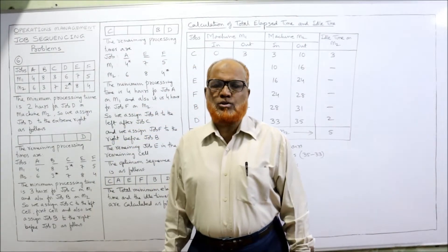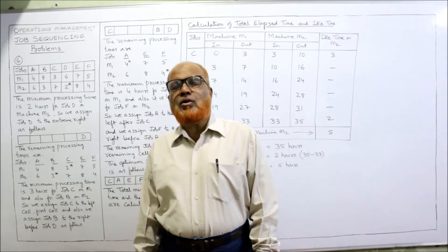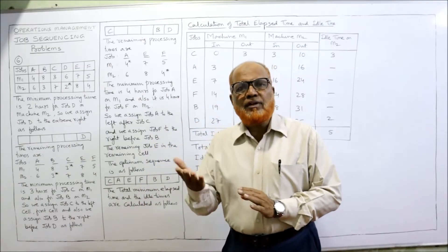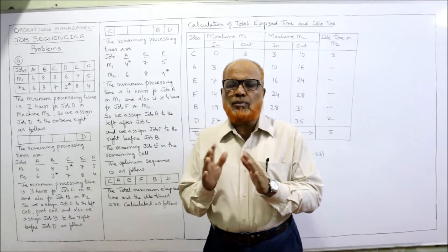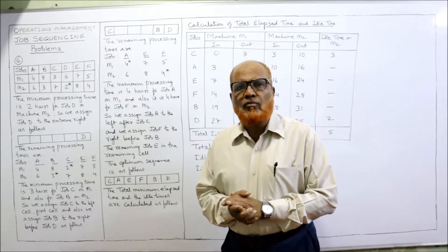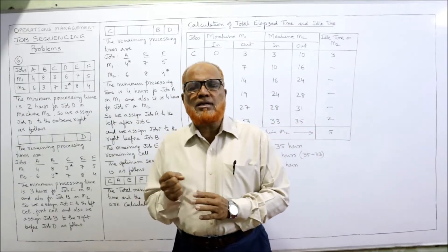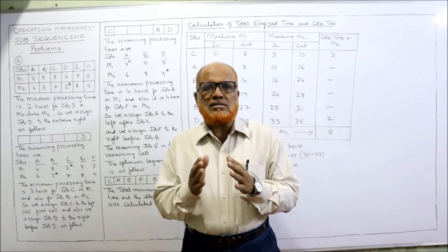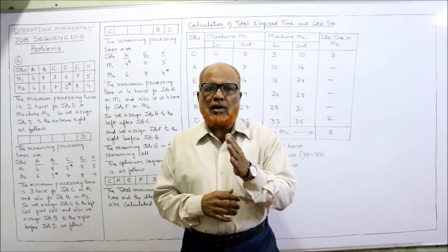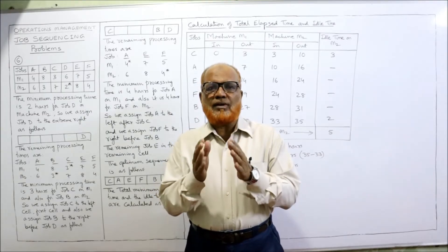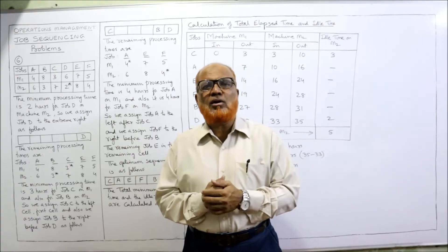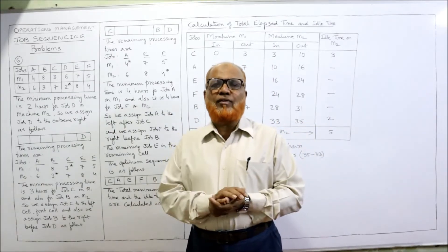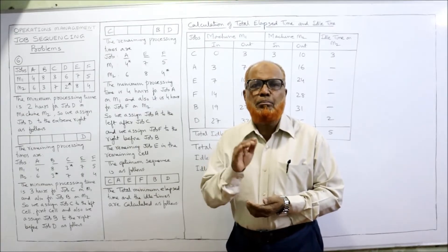Hello viewers, welcome to my channel. I'm Harsha Malikha. So far five problems we have completed on sequencing. This is the last video — the sixth problem — which is the last problem for two machines and n jobs. After this we will have three machines and n jobs. I hope you have already watched the first five problems and got complete command on how to solve sequencing problems, where n number of jobs pass through two machines in the order M1 to M2. We have to find the optimum sequence so that the total elapsed time is minimum.